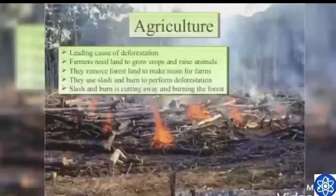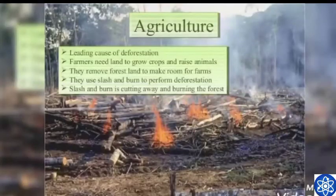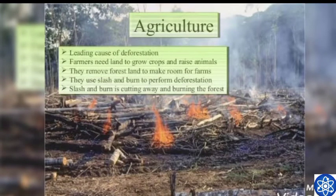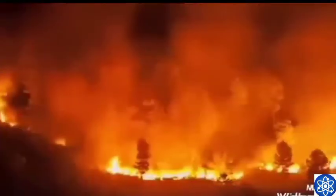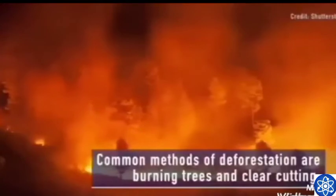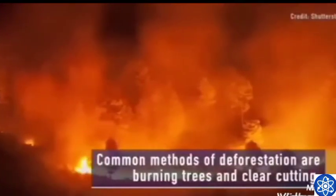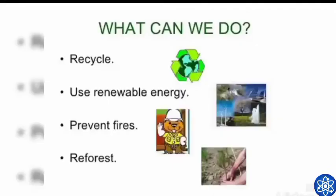When farmers need more land to grow crops and raise animals, they need land — that's why they also cut down the forest. The common method of deforestation is burning trees.